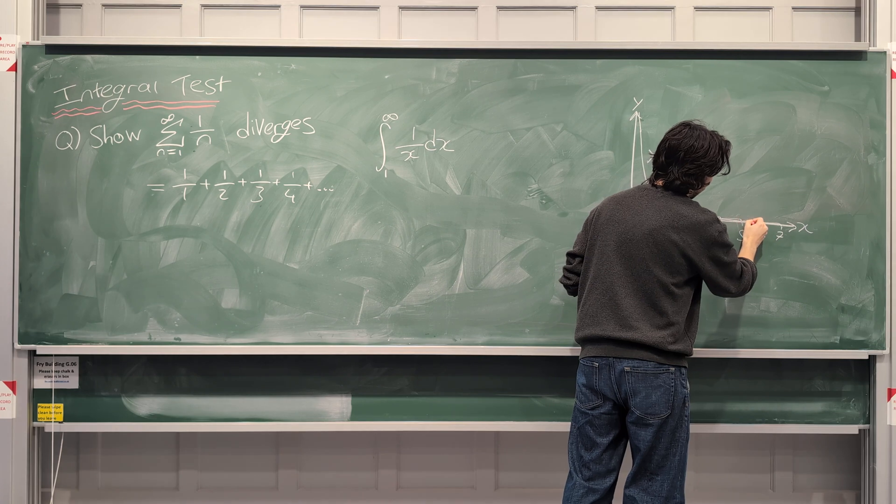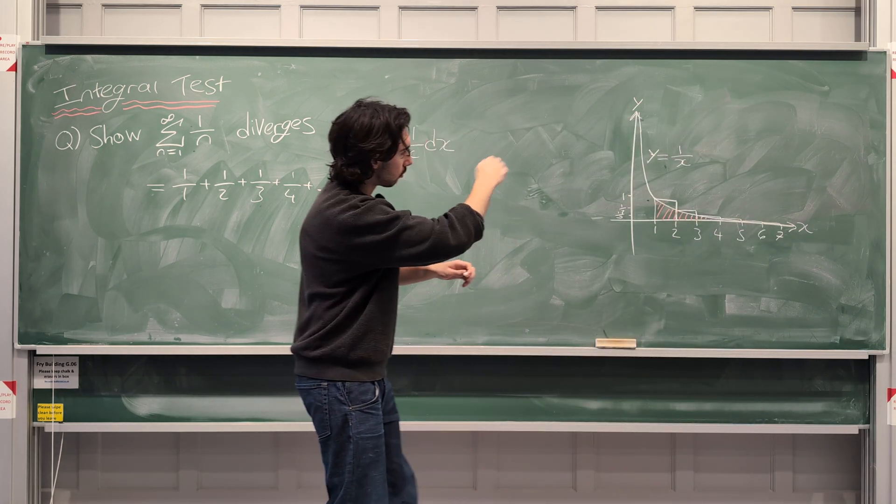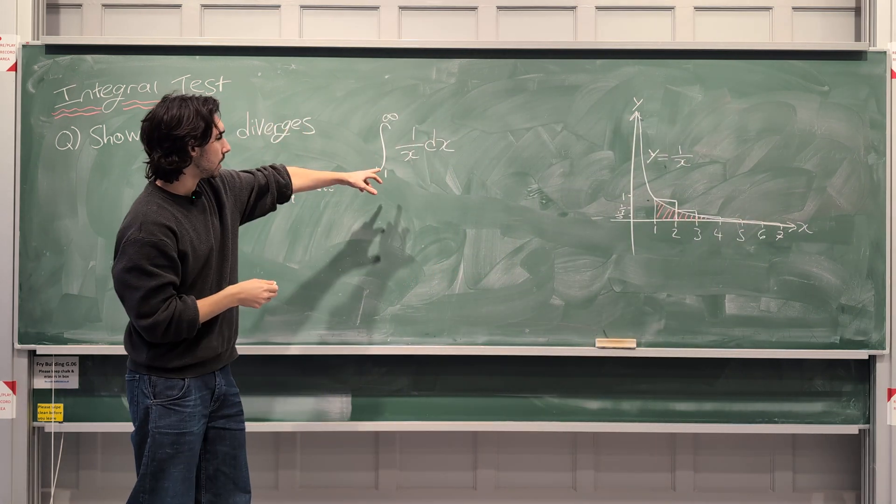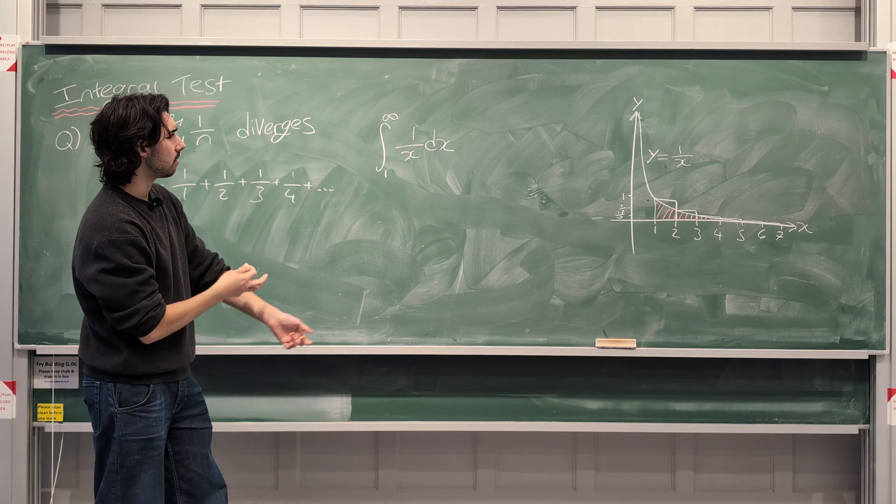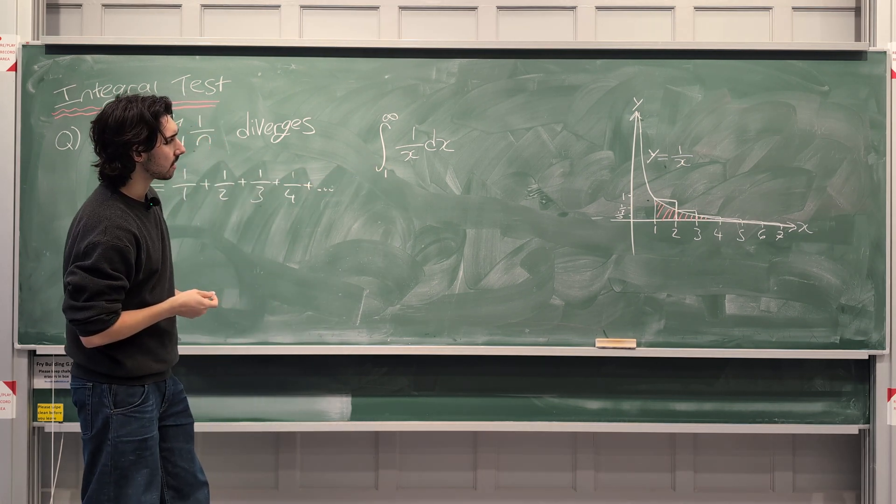Well, it's representing this area. And again, that goes on infinitely. But the red area is this integral. Do you agree with that? Hopefully you do. This is an improper integral. Hopefully that makes sense.